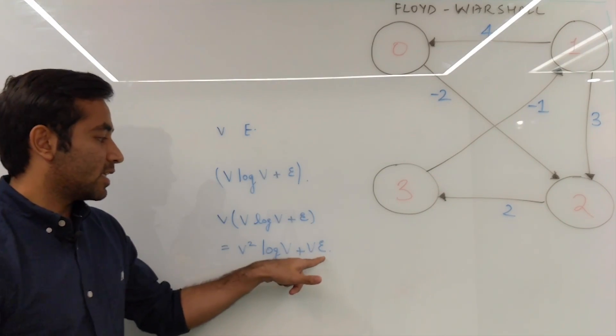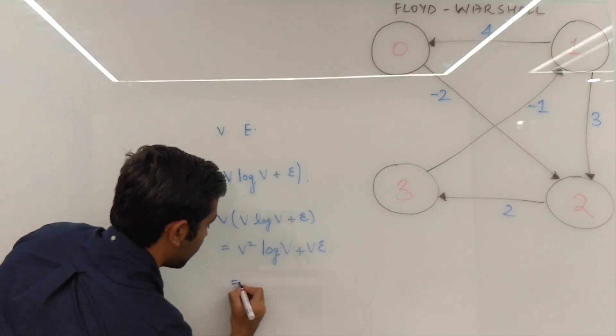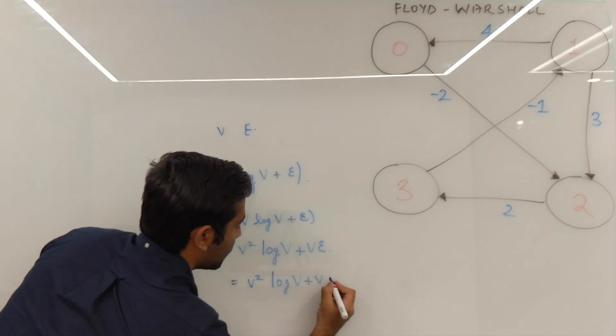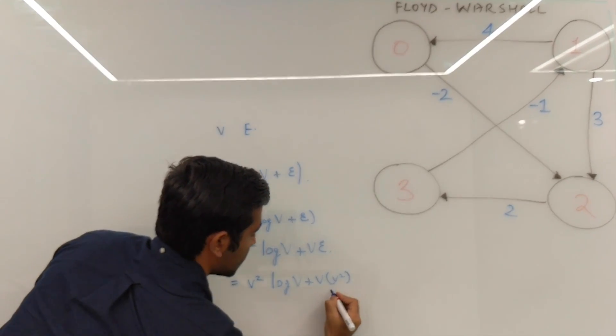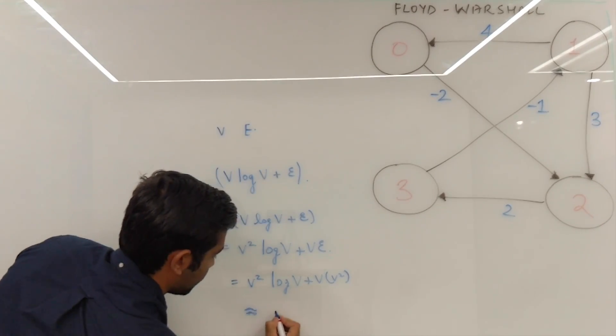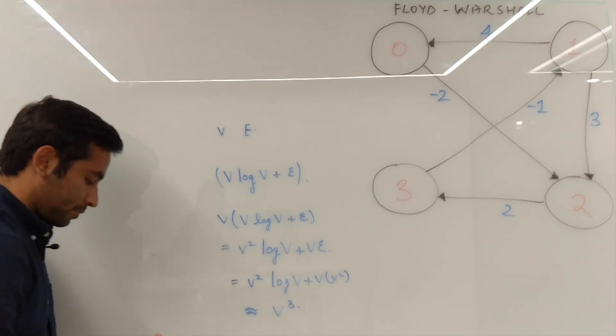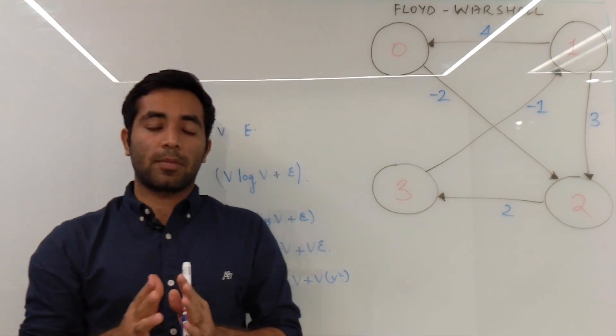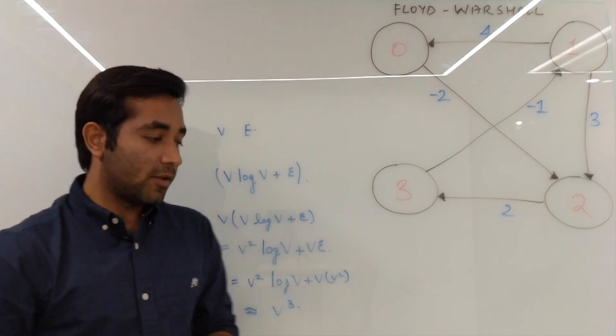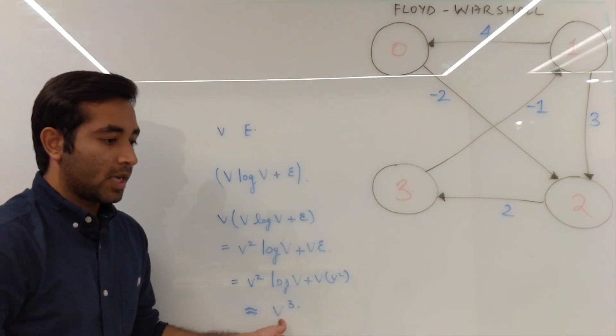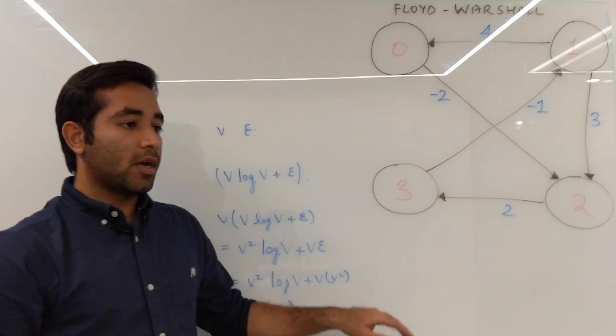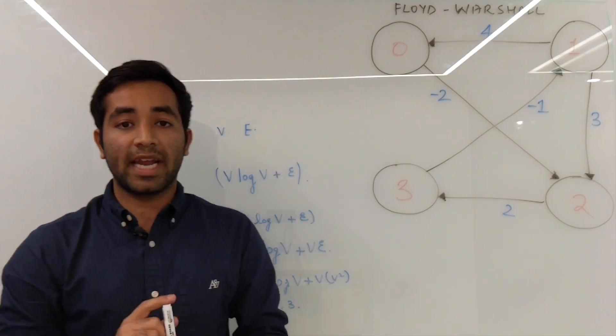Hence the complexity will be V times V log V plus E. Now if we take the worst case scenario, we will have V squared plus V log V plus V into V squared, which is V cube. So Dijkstra for a graph which has all positive edges will solve this problem in V cube. We will try to solve the similar problem with the similar complexity, but including negative edges and not negative cycles.